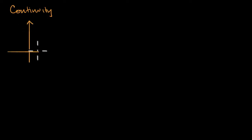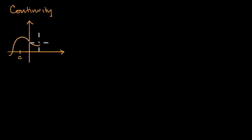What we're going to do in this video is come up with a more rigorous definition for continuity. The general idea of continuity — we've got an intuitive idea from the past — is that a function is continuous at a point if you can draw the graph of that function at that point without picking up your pencil. Let's think about the point right over here, let's say that's x = c. If I can draw the graph at that point without picking up my pen, then it's continuous there. I can go through that point, so we could say that our function is continuous there.